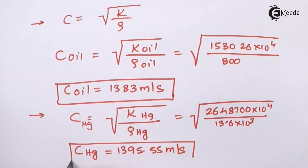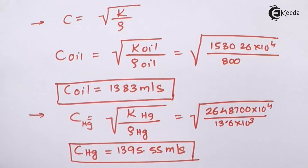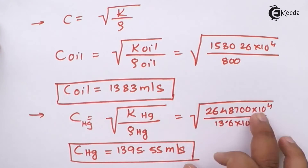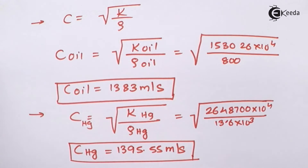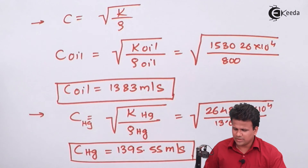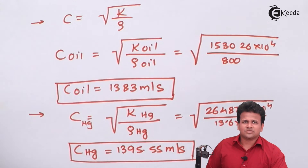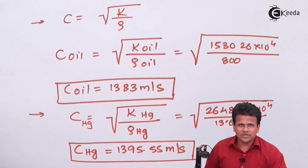A common mistake students make here is not calculating the square root of the entire fraction. Taking the square root is essential to correctly compute the velocity of sound. I hope you have understood how we calculated the velocity of sound in two different fluids — crude oil and mercury — by using their bulk modulus and density values.